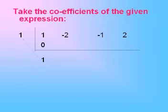Add 1 and 0, we get 1. Multiply this 1 with the previous 1, we get 1. We write it below minus 2.